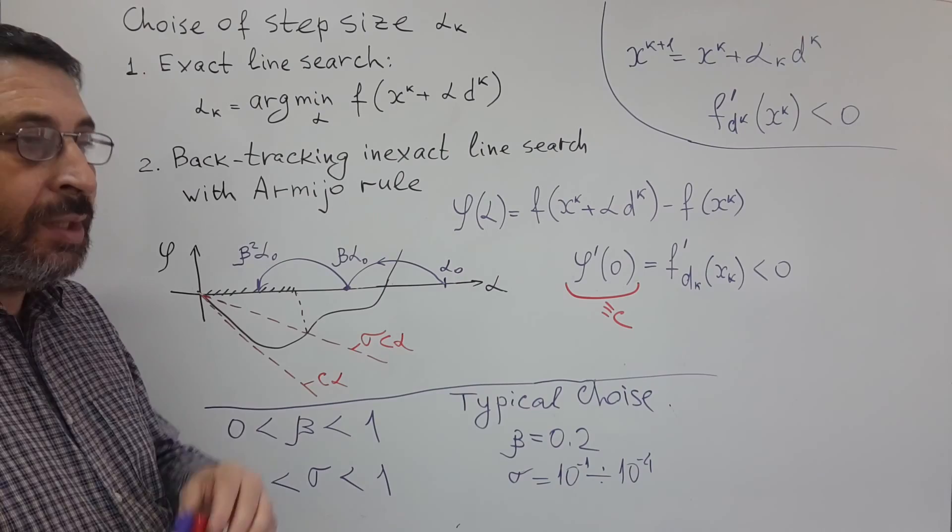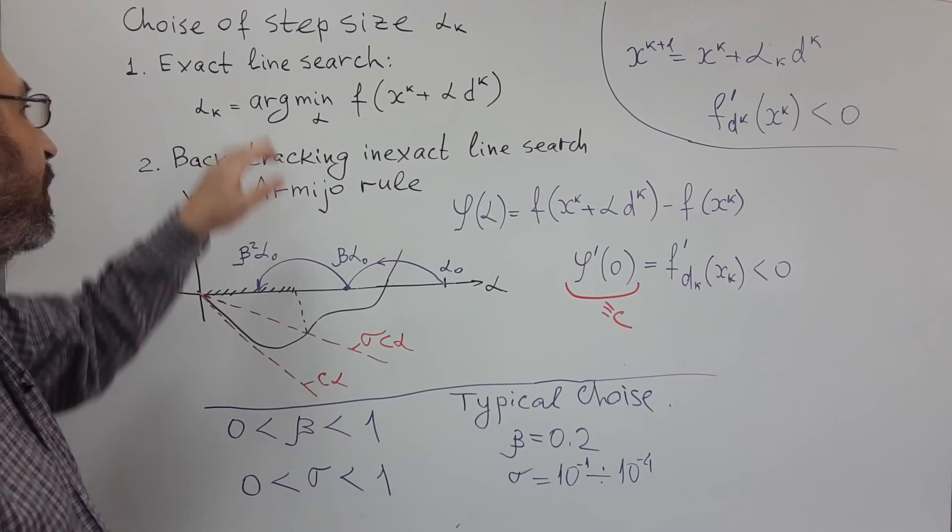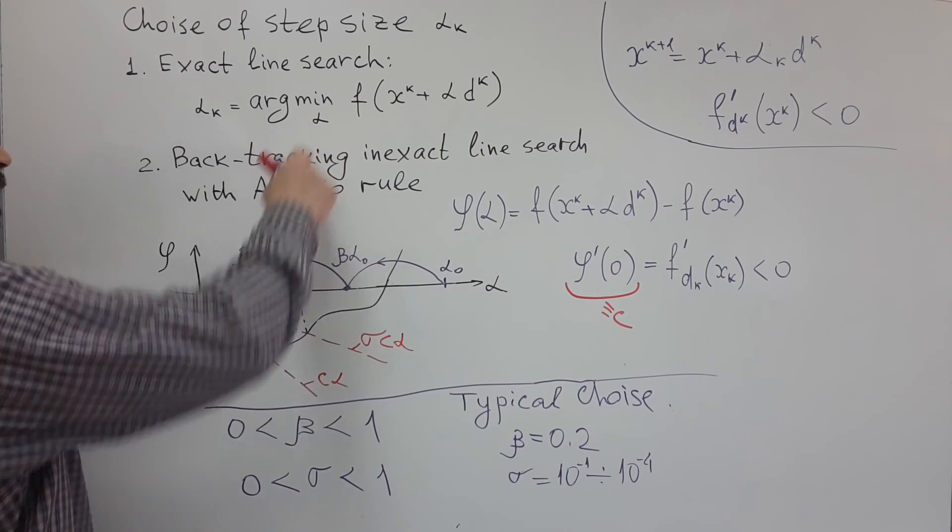Until we reach some very good accuracy. So, we minimize this function of one variable, function of alpha.